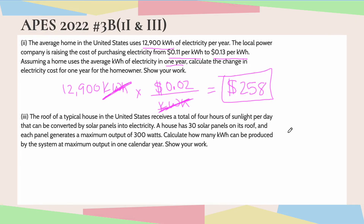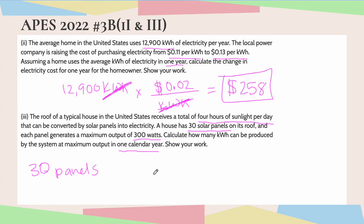Moving on to part three. The roof of a typical house in the U.S. receives a total of four hours of sunlight per day that can be converted by solar panels into electricity. A house has 30 solar panels on its roof, and each panel generates a maximum output of 300 watts. Calculate how many kilowatt hours can be produced by the system at maximum output in one calendar year. Show your work. So what are our givens? We know the house has 30 panels, and the maximum output is 300 watts per panel.